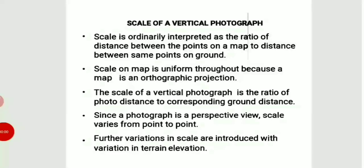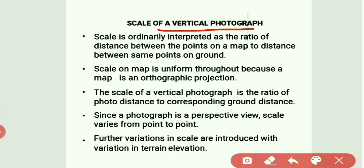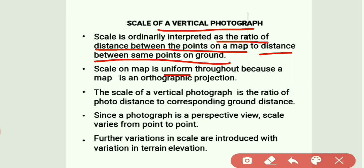Now how to find the scale of the vertical photograph. Generally, scale is the ratio of distance between points on a map to the distance between the same points on the ground. Jo bhi map ke upar points select karenge unka distance divided by distance of same points on the ground — is ratio ko hum scale kehenge. Scale on a map is uniform because map is an orthographic projection.